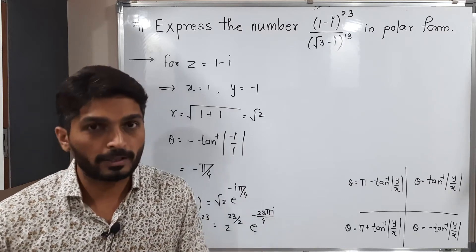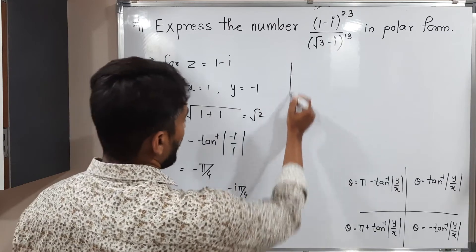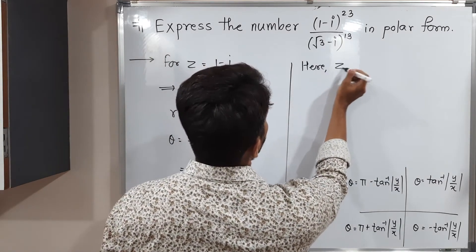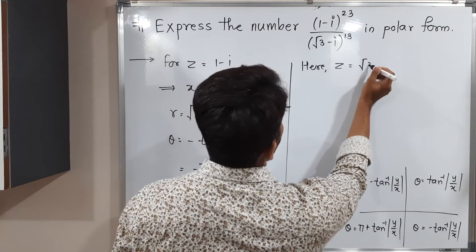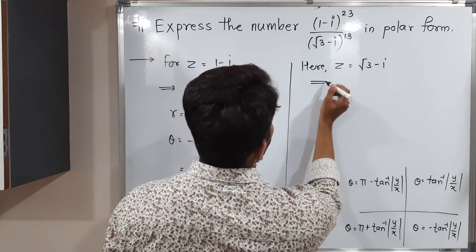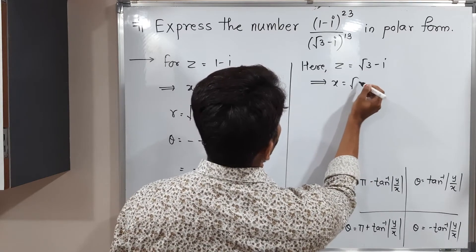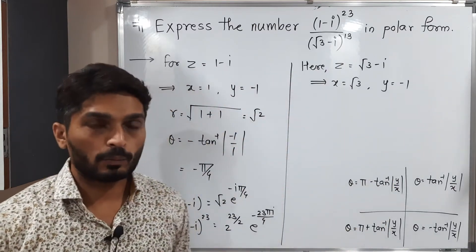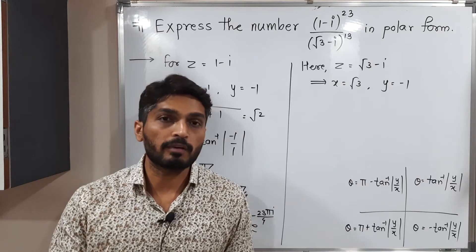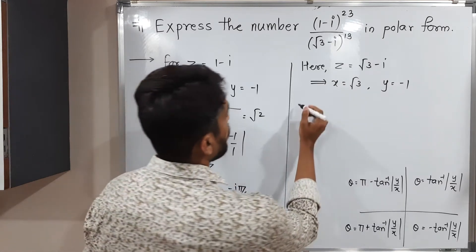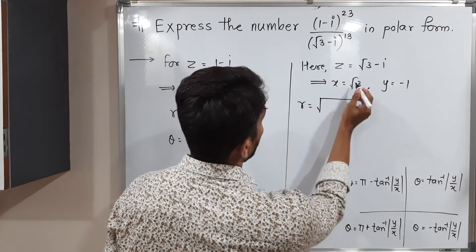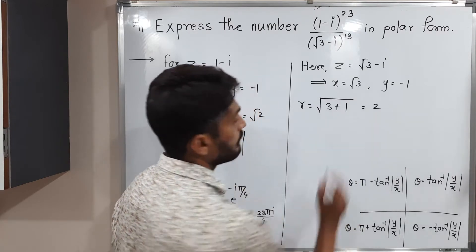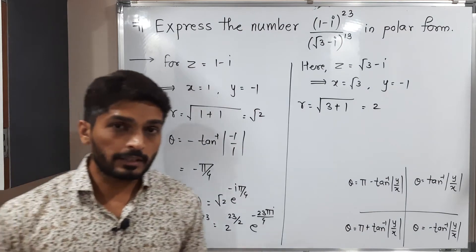Now let us do the same thing for the denominator. We have z equal to root 3 minus i. So the real part x is root 3, and the imaginary part y is minus 1. The formula of R gives square root of x squared plus y squared, that is square root of 3 plus 1, so R equals 2.